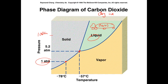Dry ice is dry because we're at a pressure below the triple point. The CO₂ triple point is fairly easy to achieve: at 5.2 atmospheres and negative 57 degrees Celsius you can have the liquid, solid, and vapor phases all occurring in equilibrium with each other simultaneously.